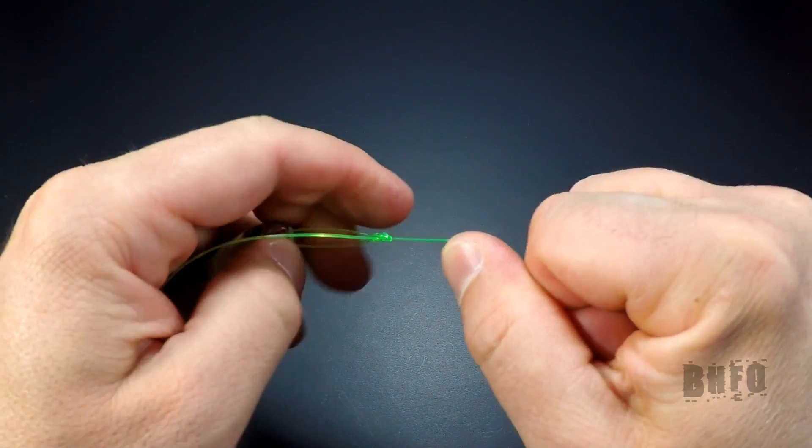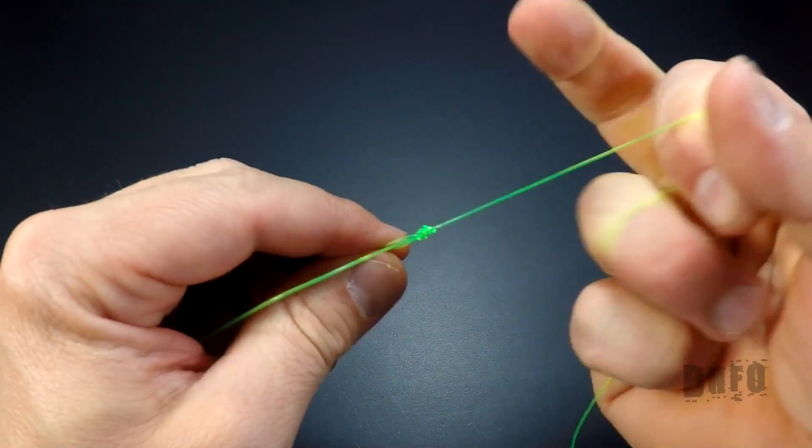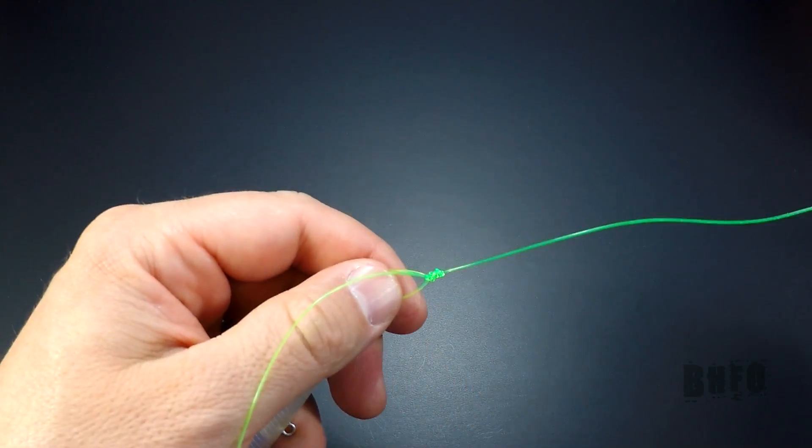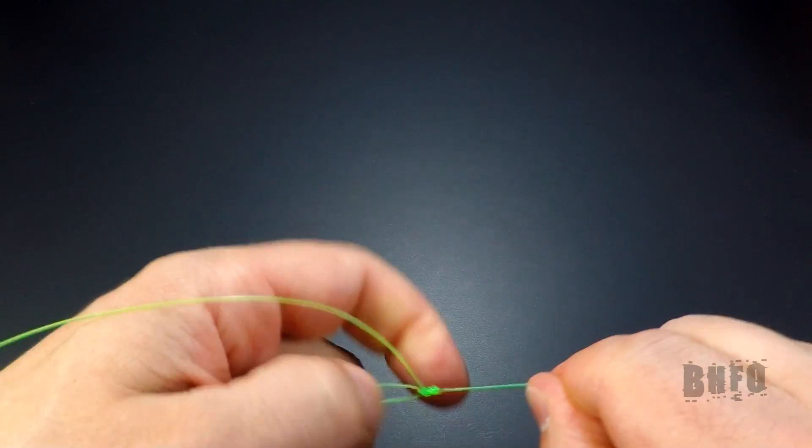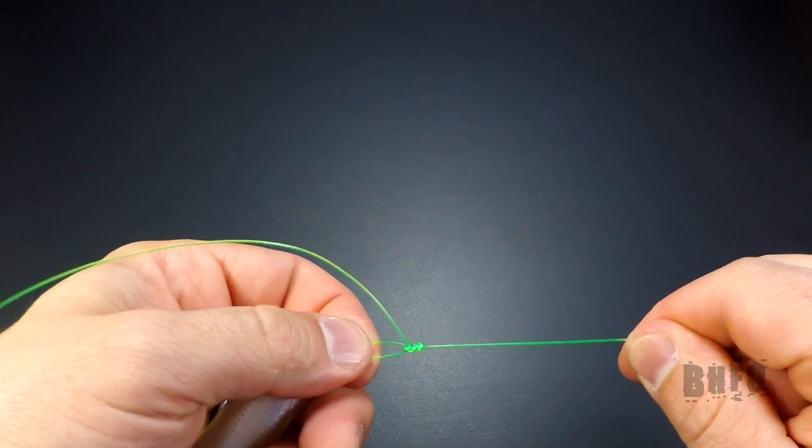You may need to cinch up a bit more using your thumb and index finger pinching just above the knot while pulling on the main line until the knot is nice and tight. Repeat if necessary.